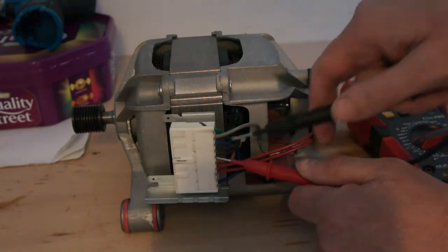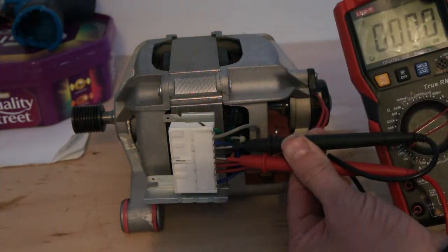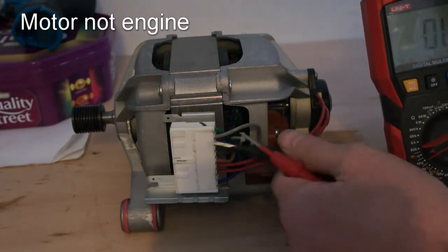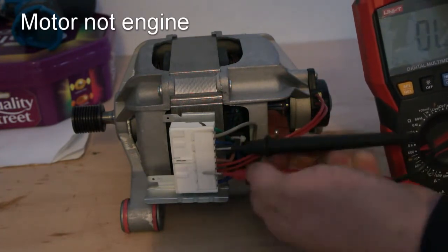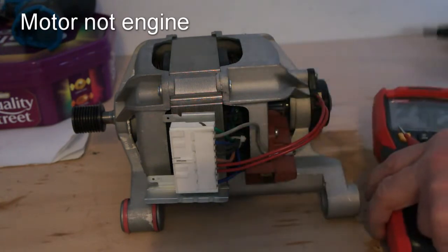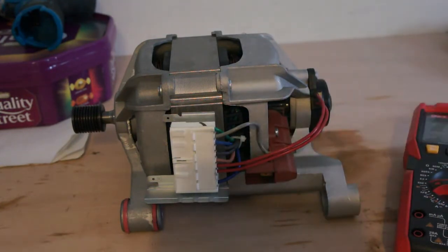And then this one here, I don't really know what this is but it's closed. It's very low resistance so I'd say that's a thermal cutout for the engine. If that cuts out obviously the engine will stop. Maybe, I don't know for sure. Just a guess, it could just be the winding connected together.